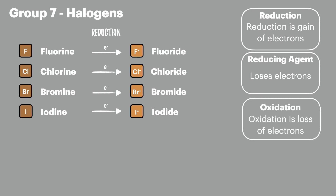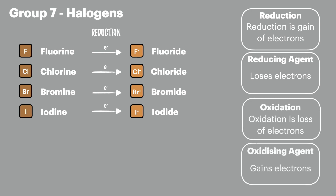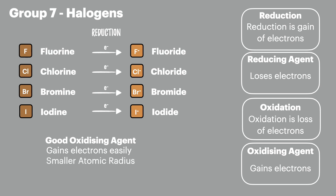Oxidation is when a species loses electrons and an oxidizing agent gains electrons so other species can be oxidized. When the halogens are reduced they act as oxidizing agents, and a good oxidizing agent will gain electrons easily because it has a smaller atomic radius and less electron shielding.